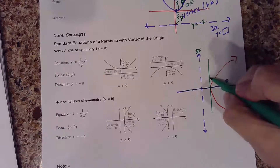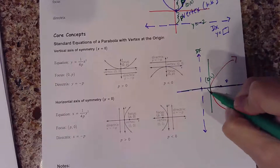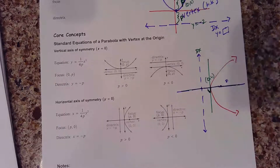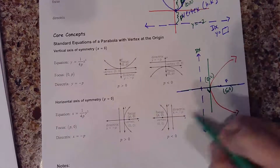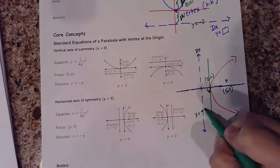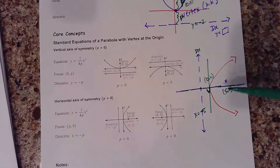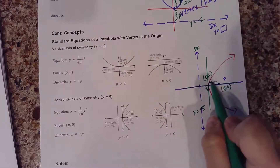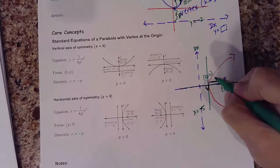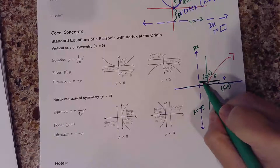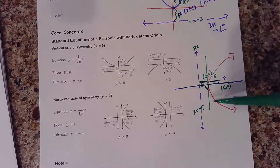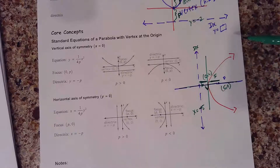For example, with the vertex at (0, 0), let's say the focus was at the point (5, 0) because we're on the x-axis. Then the directrix would be x equals negative 5. It's the same distance — this distance from the vertex to the focus is 5, and the distance from the vertex to the directrix is 5. That's that p-value. It's always the same distance away from the vertex.